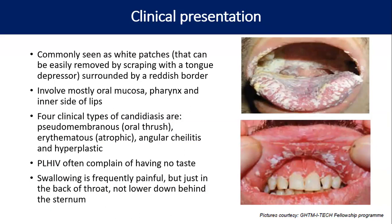The presentation is white patches surrounded by red borders, mostly affecting the tongue, inside of the mouth, and the mucosa of the lips. There are four types of candidiasis: pseudomembranous or oral thrush, erythematous, angular cheilitis, and hyperplastic. PLHIV often complain of having no taste. Swallowing is usually painful just below the back of the throat and not lower down the sternum — because if it is lower down the sternum, we call it odynophagia, which is a sign of esophageal candidiasis.